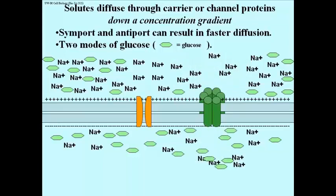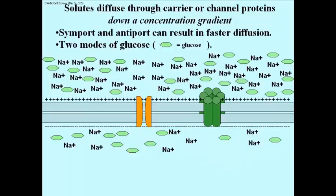And that's going to allow symport of sodium ions and glucose. So this protein has evolved to take advantage of the electrochemical gradient where the sodium ions are able to move in readily because they are positive and the inside of the cell is electronegative relative to the outside of the cell.